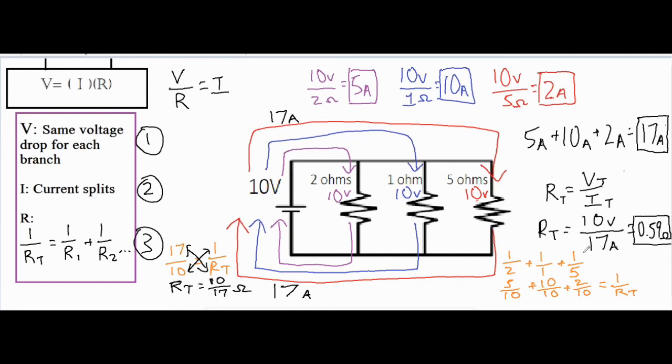Which is the exact same thing that we got over here. So what you can do is you can go ahead and add up these fractions manually, or you can also put them into your calculator and add them up. In that case, you would get 1.7. So if you were to do that in the calculator, then you would get 1.7 equals 1 over RT. Similarly to what we just did a little bit ago, you can go ahead and do a cross multiplication here, and then RT is 1 divided by 1.7, and that gives me 0.59, which is the same thing that I got over here.